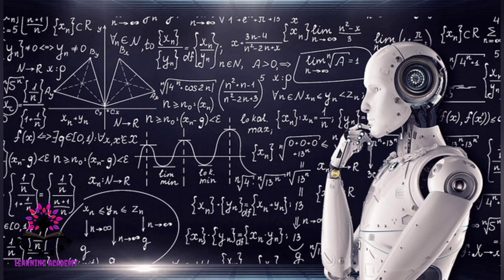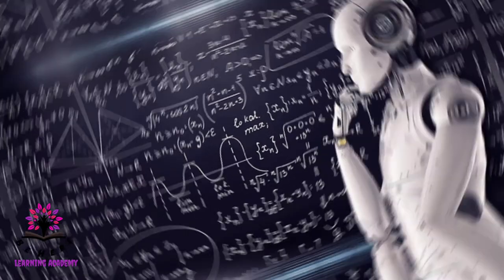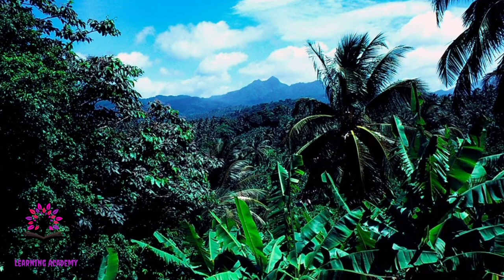Through science and technology, man has invented various machines by the use of various natural resources, which have made his life easier. Natural resources are resources that exist without any actions of humankind. For example, on Earth they include sunlight, atmosphere, water, vegetation, animal life, etc.